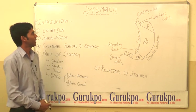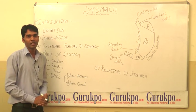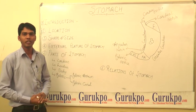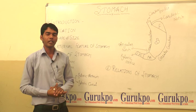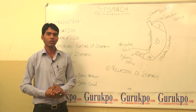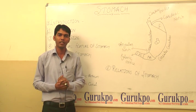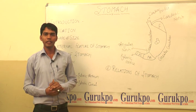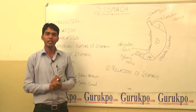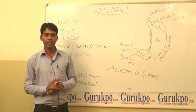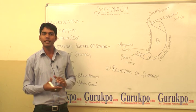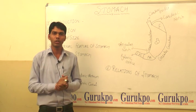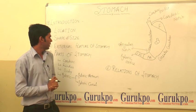Let's introduce our topic. The stomach is 25 cm long. The mean capacity of the stomach at birth is 30 ml, in puberty it is 1 liter, and in adults it is 1.5 to 3 liters or more in capacity.